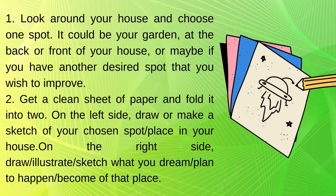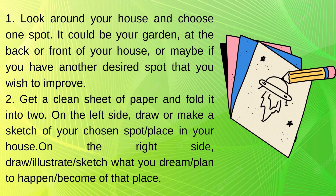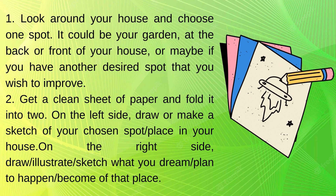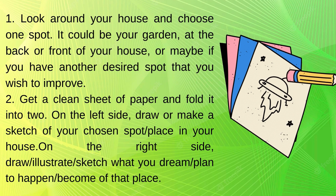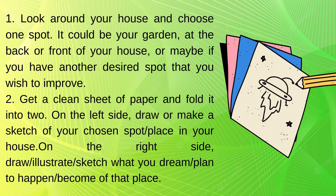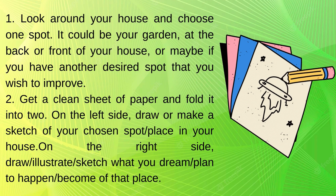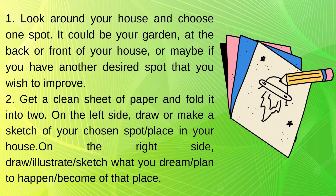1. Look around your house and choose one spot. It could be your garden, at the back or front of your house, or maybe another desired spot that you wish to improve. 2. Get a clean sheet of paper and fold it into two. On the left side, draw or make a sketch of your chosen spot or place in your house. On the right side, draw or illustrate or sketch what you dream or plan to happen or become of that place.